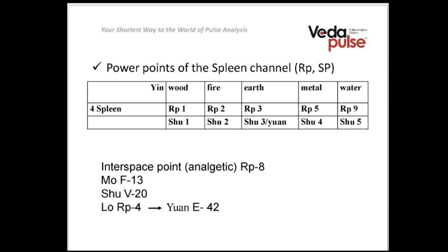Now we are going to discuss the power points of the spleen channel. There are points of five elements in our body, and each channel has its own five-element points which we can work with. We can assign particular tasks to these biological active points, but to do that we need to understand their functions and their connections to organs. For the spleen, its element is earth, which is the center of all other elements.